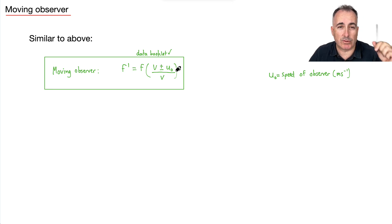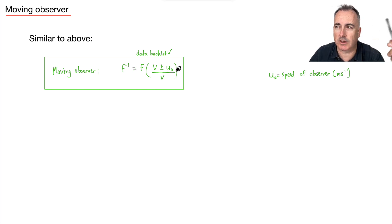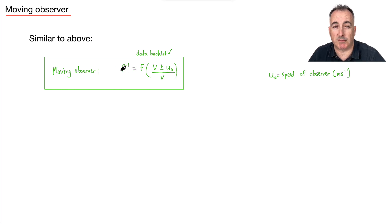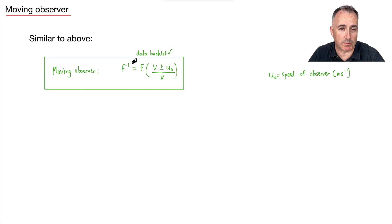Again, just use some thought. If you get a question on this on an exam, think: do I want the observed frequency to be higher? If so, I want to make the numerator bigger, so I add. If I want to make it smaller, then I use minus.